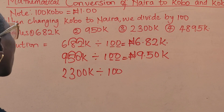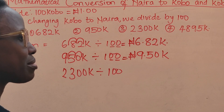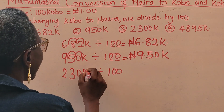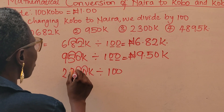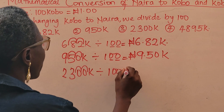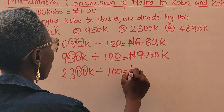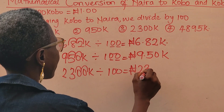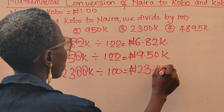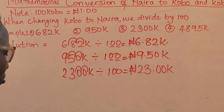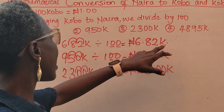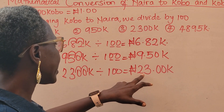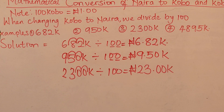The next question: 2300 kobo divided by 100. Anytime you are converting from kobo to naira, just divide by 100. I move the decimal point one and two — it's now between 23 and 0. My answer is 23.00, which is 23 naira. So we have: 6 naira 82 kobo, 9 naira 50 kobo, and 23 naira.